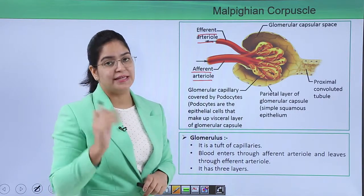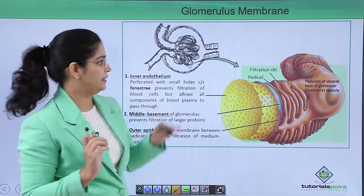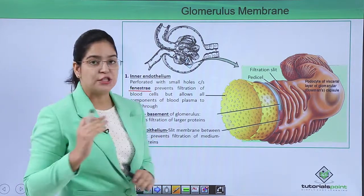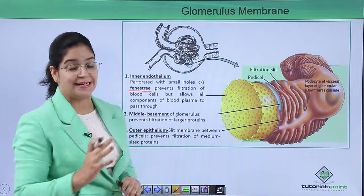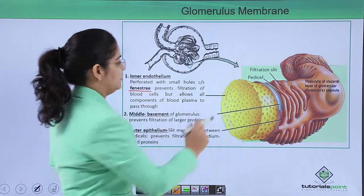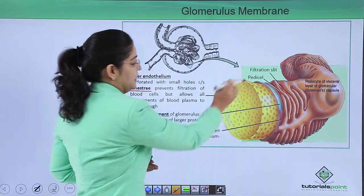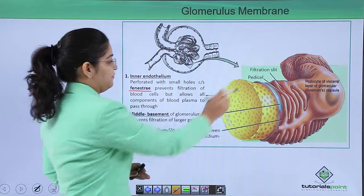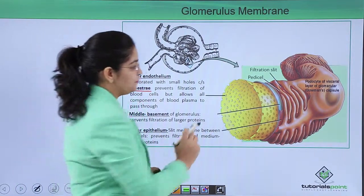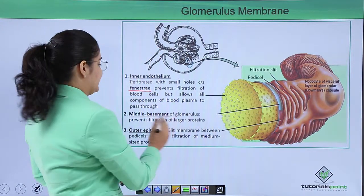The glomerulus is made up of three layers. The first is the inner endothelium, which contains fenestrations that prevent the filtration of blood cells but allow plasma through. The second is the middle basement membrane layer, which prevents the filtration of larger proteins.